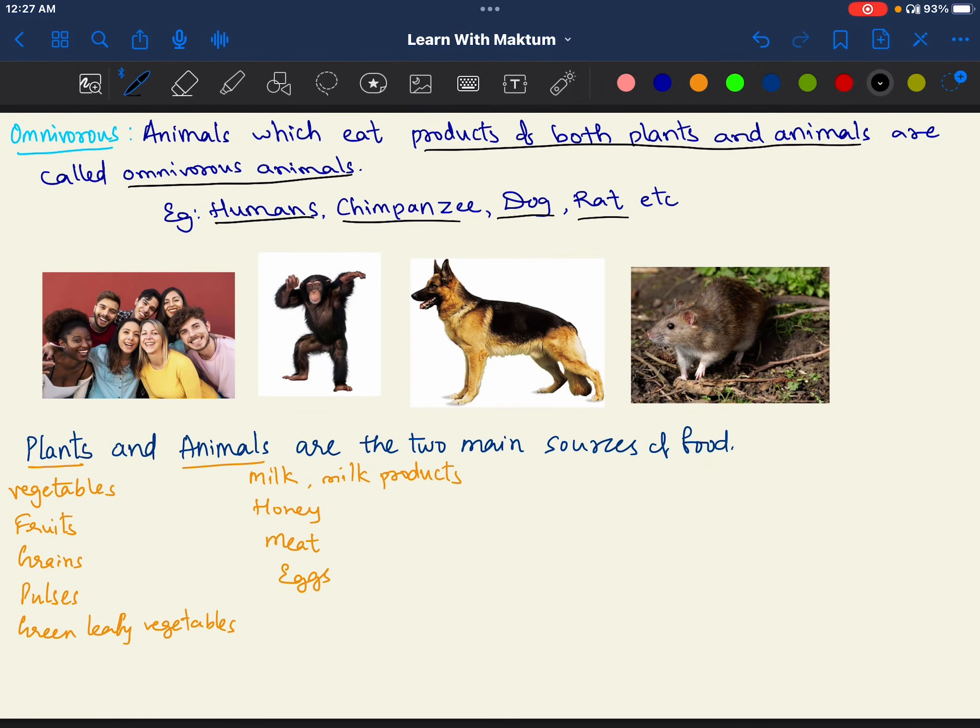Food is the main source. Plants are one source and animals are another. Plants and animals are the two main sources of food. Plants include vegetables, fruits, grains, pulses, leafy vegetables. Animals include milk, milk products, honey, meat, eggs. All these we get from animals.